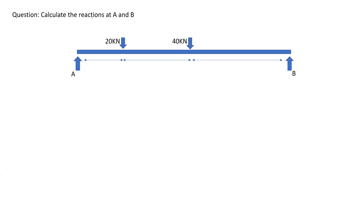In this video we will calculate the reactions at A and B in the simply supported beam. We have a 20 kN force acting downwards and also a 40 kN force acting downwards. We will use 2 meters as this distance, 3 meters and 4 meters.